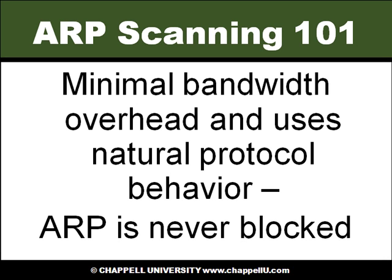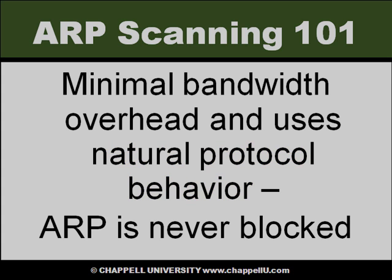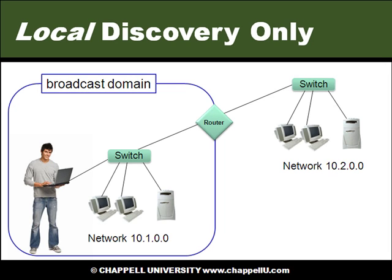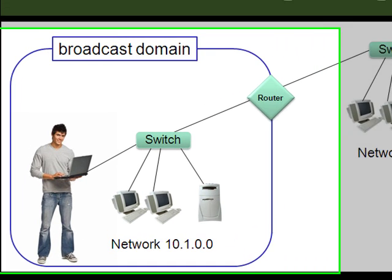In addition, when you do ARP scanning, you're using minimal bandwidth, and it uses the natural protocol behavior because ARP should never be blocked on a network. It's important to know that ARP scanning is a local discovery process only. ARP packets are non-routable packets — they don't have an IP header, so they can't go past a routing device and can only go as far as a broadcast domain.